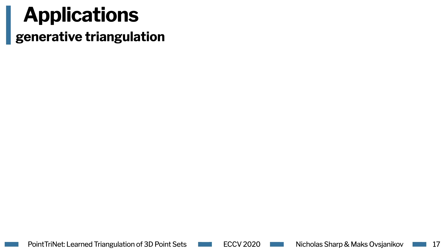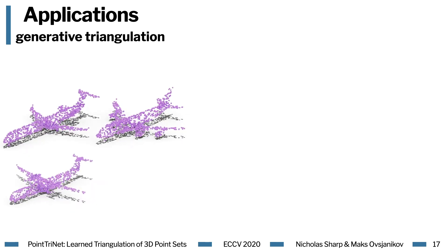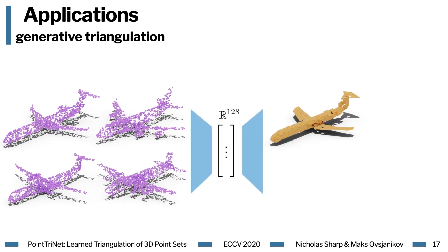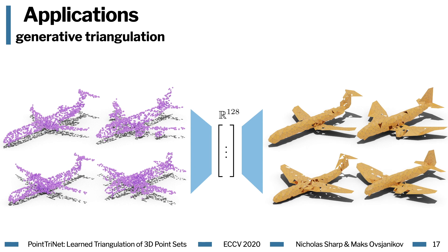One of the most exciting uses of this work is that methods which output points can be automatically upgraded to output triangles. Here, we take a standard point cloud autoencoder architecture and append PointTriNet to generate a triangle mesh as output. The whole system can be trained end-to-end, and we essentially have a decoder which is directly outputting triangle meshes. Of course, this is very preliminary, but it demonstrates what we hope will be an important use of PointTriNet moving forward.